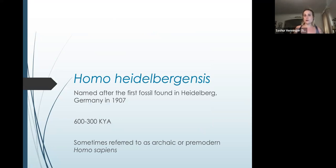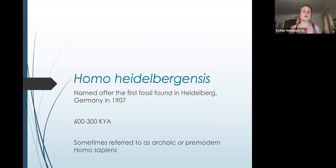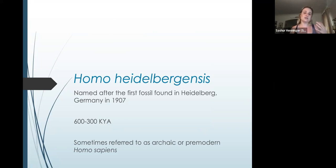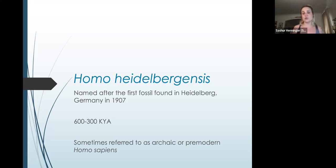The first species I want to talk about is Homo heidelbergensis, sometimes referred to as archaic Homo sapiens or pre-modern Homo sapiens. This species was named after its location where it was first found in 1907 — Heidelberg, Germany. The fossil record shows evidence of this species between 600 and 300,000 years ago in Africa and around the world. The molecular evidence suggests that the species must have evolved earlier, maybe even as early as 1 million years ago, but we don't have the fossil evidence to support that.